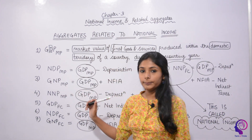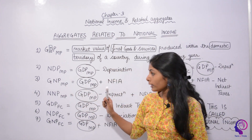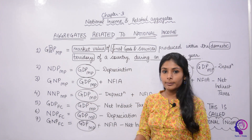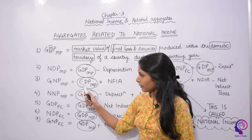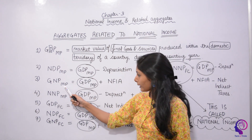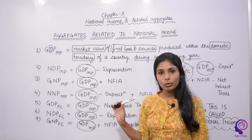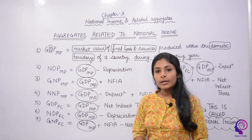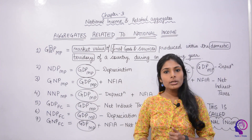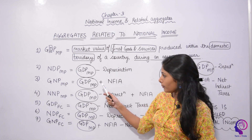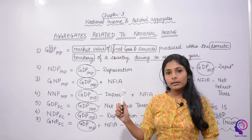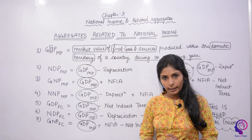Next, to go from GDP MP to GNP MP — gross is the same, and both are at MP, but the difference is domestic versus national. So you add NFIA. Adding net factor income from abroad converts the domestic product to the national product.